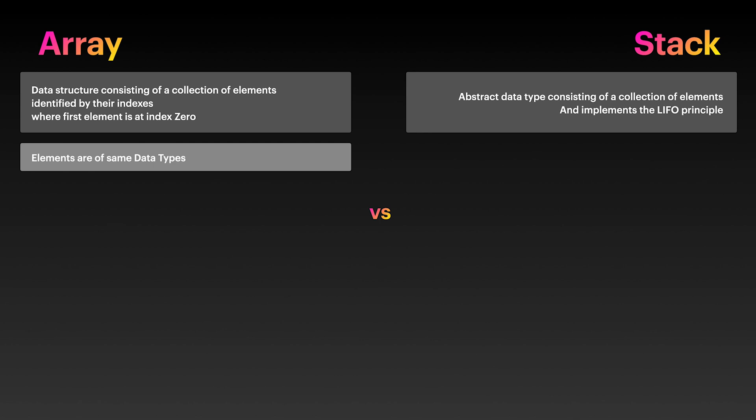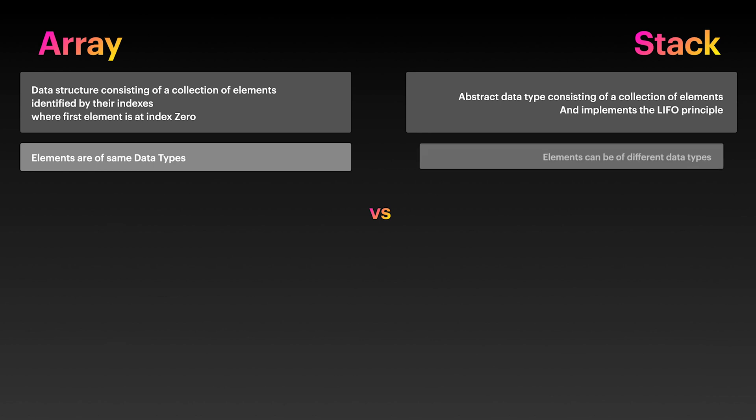Arrays can only contain the same data type. If you come from JavaScript, you may have a different idea of this because you can put many data types in your typical array, but this is because in JavaScript arrays are list-like objects with special powers. You need to use JavaScript typed arrays for this to be true. Stacks, though, are just a collection of items, so they can contain mixed data types.